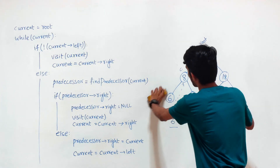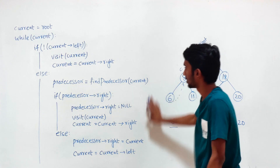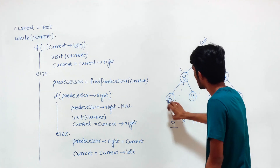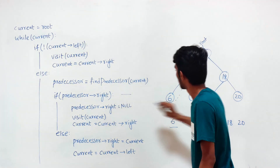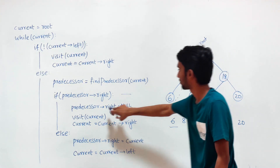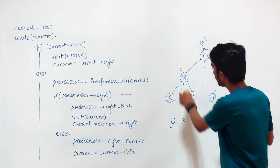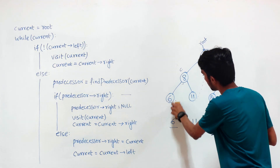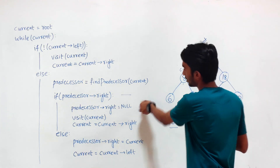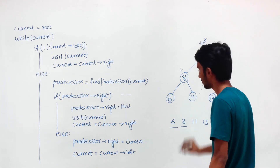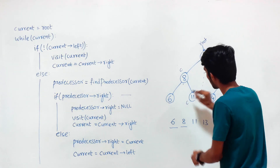Current goes to 8. When we are at 8, we have a left subtree, so we go to the else part. Now the predecessor's right exists. Since predecessor's right exists, we set predecessor's right to null, removing this link. We visit node 8 and move current to current's right, giving control to the right subtree.